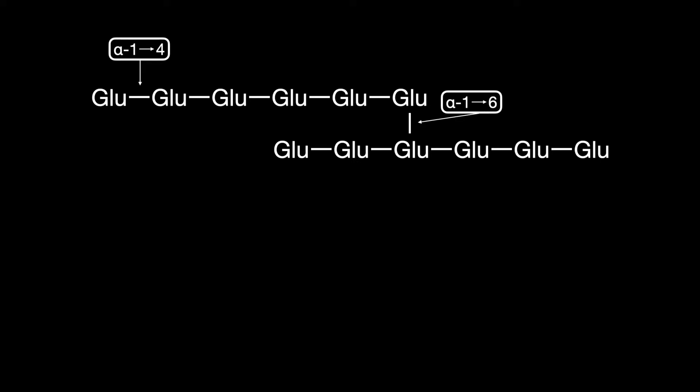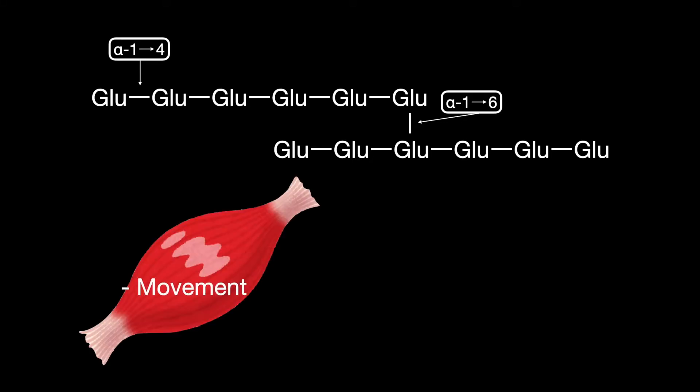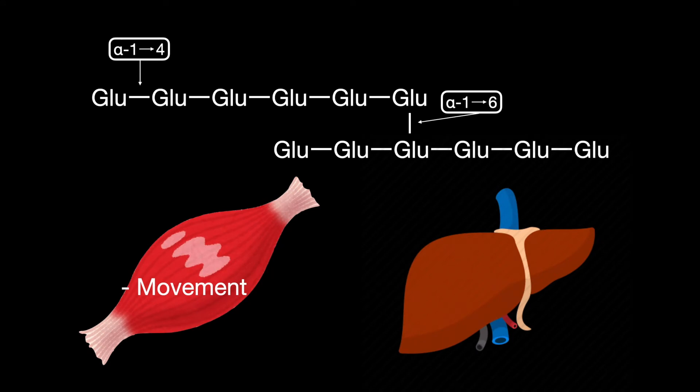Glycogen is stored in the skeletal muscles and in the liver, specifically in hepatocytes. In the muscles, it is used for movement, and in the liver, it is used to maintain blood sugar levels.